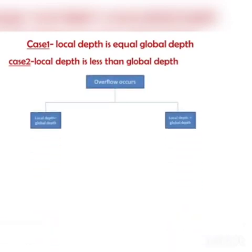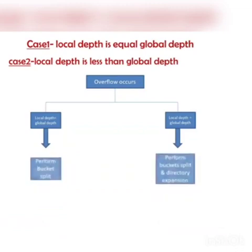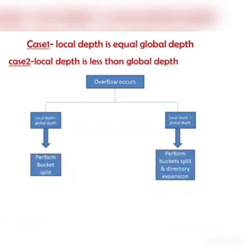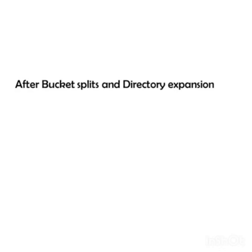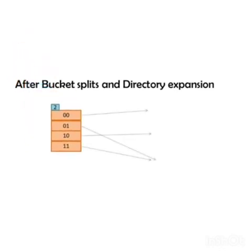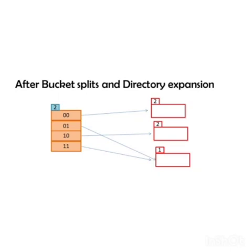When an overflow condition occurs, there are two cases. In case 1, if local depth equals global depth, we perform bucket splitting and directory expansion. In case 2, if local depth is less than global depth, we just perform bucket splitting. Here, since local depth equals global depth, the directory gets expanded and the overflowing bucket gets split. The global depth is incremented by 1, becoming 2, and data is rehashed with respect to 2 LSBs.